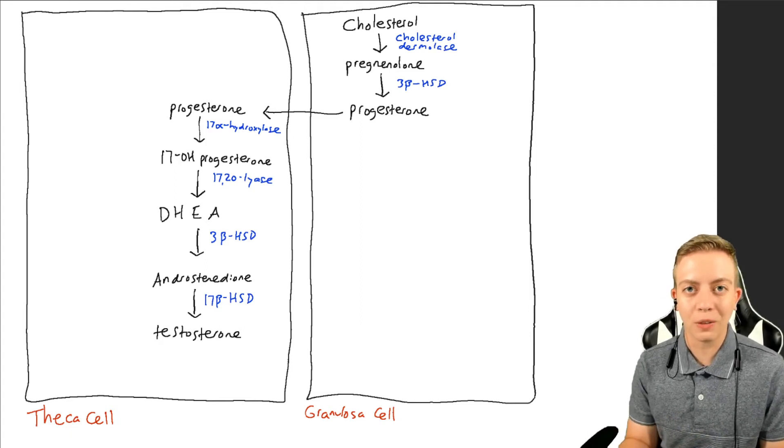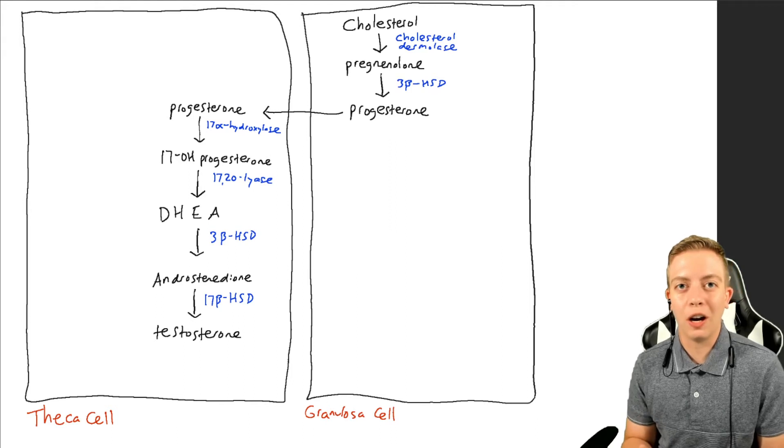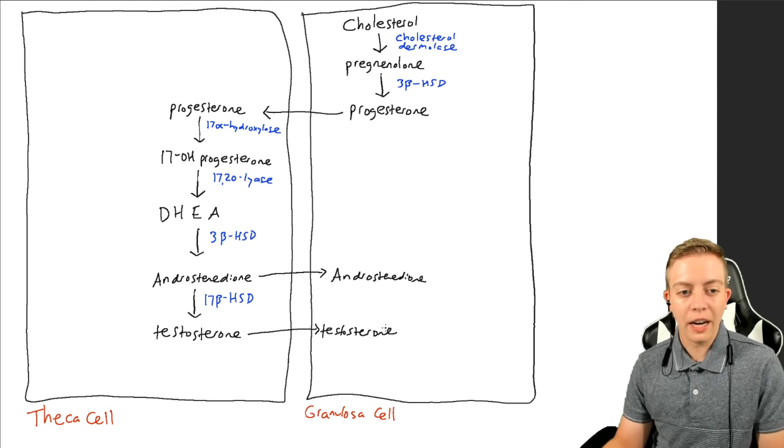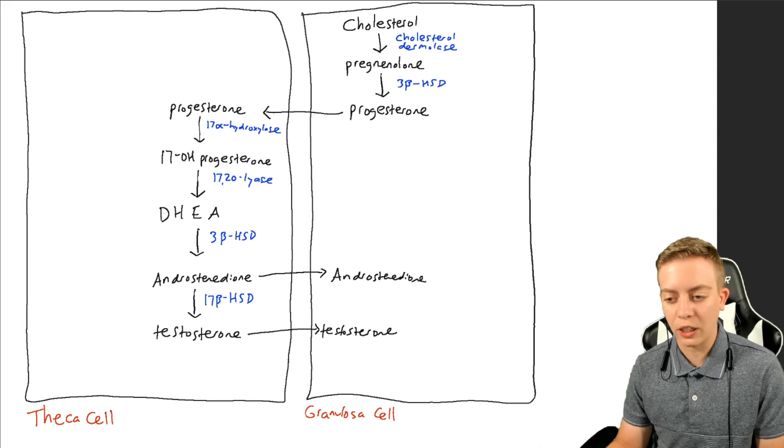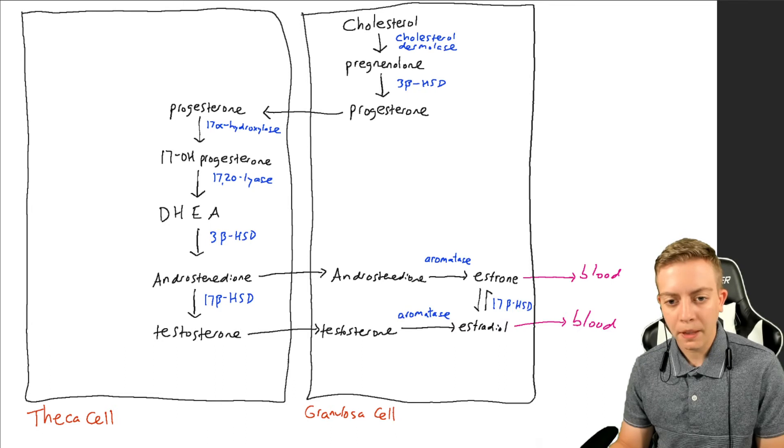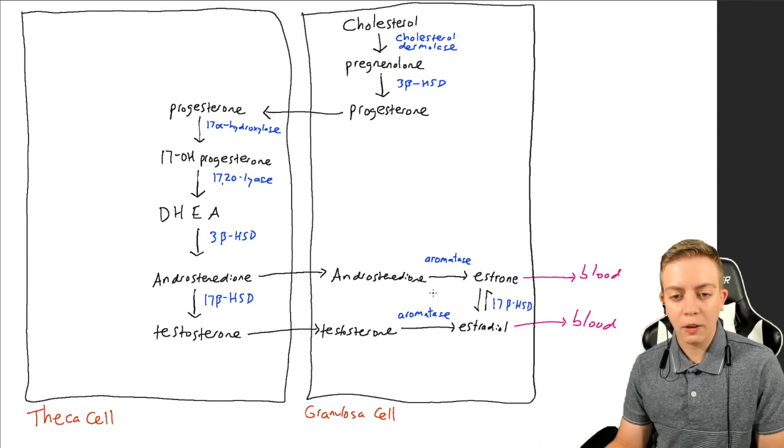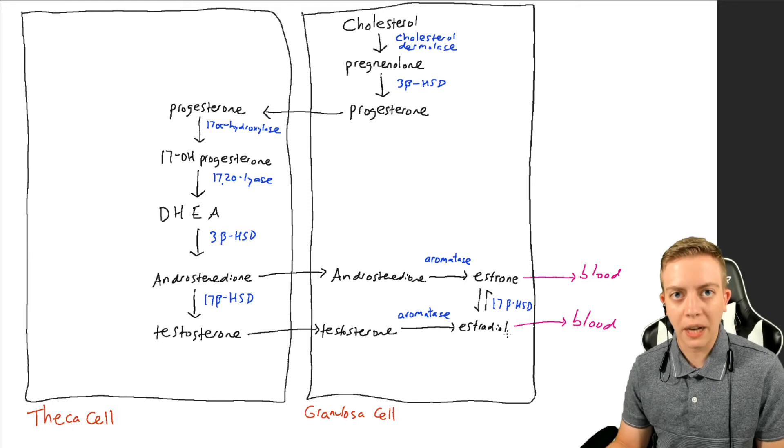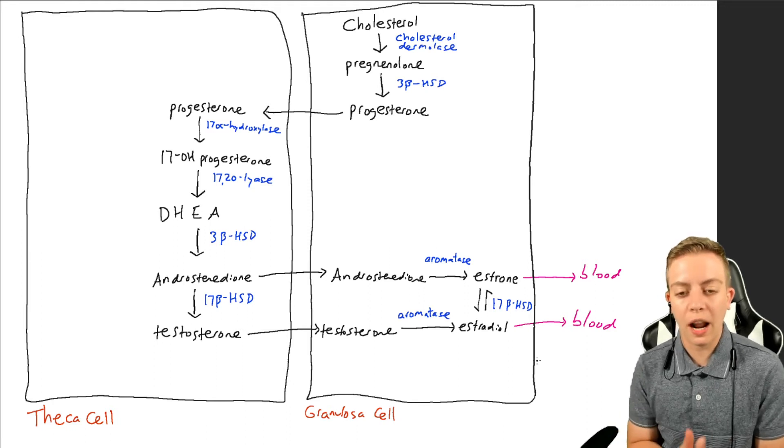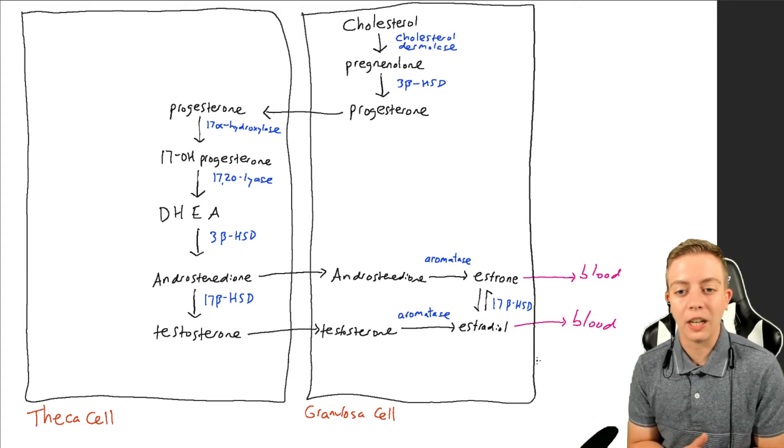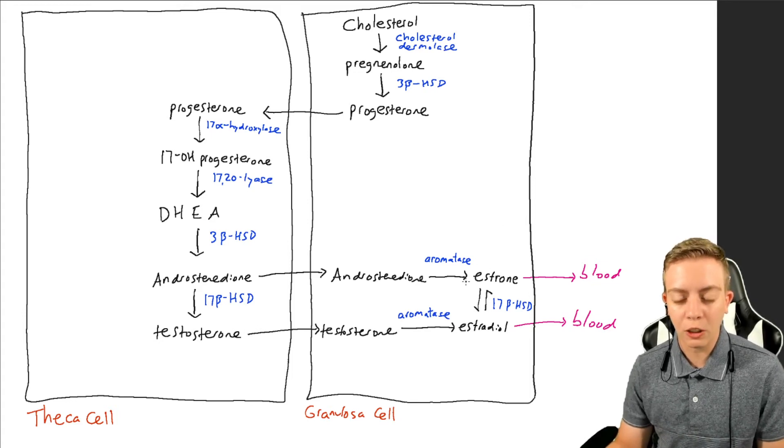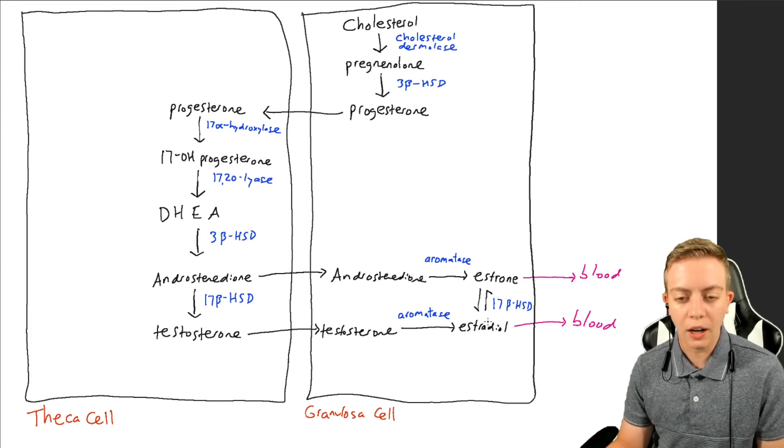from the theca cell back to the granulosa cell to undergo aromatization into estrogens. So we can see that here, we have androstenedione can go back to the granulosa cell, same thing as testosterone. It can go back to the granulosa cell and be converted via aromatase to estrone or to estradiol, respectively. And then, as we know from before, estrone and estradiol can be interconverted via 17-beta-HSD. Then once those are produced, either your estrone or your estradiol can